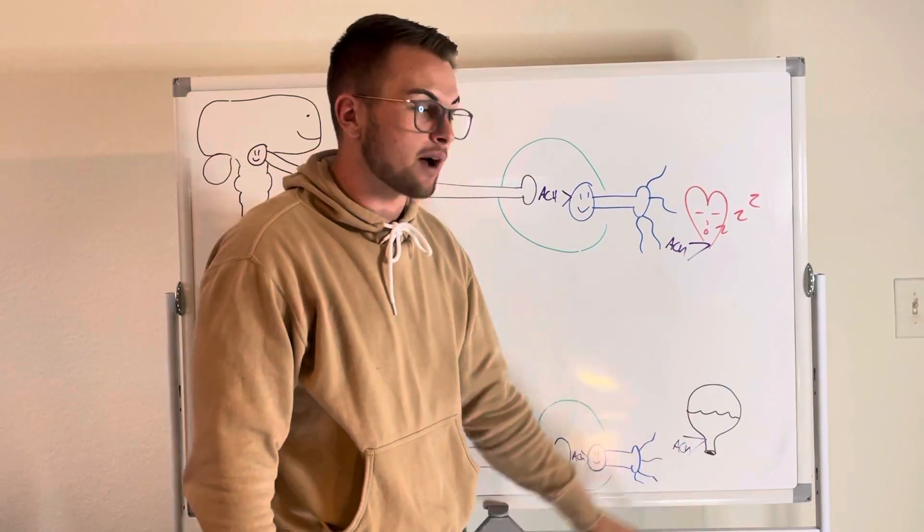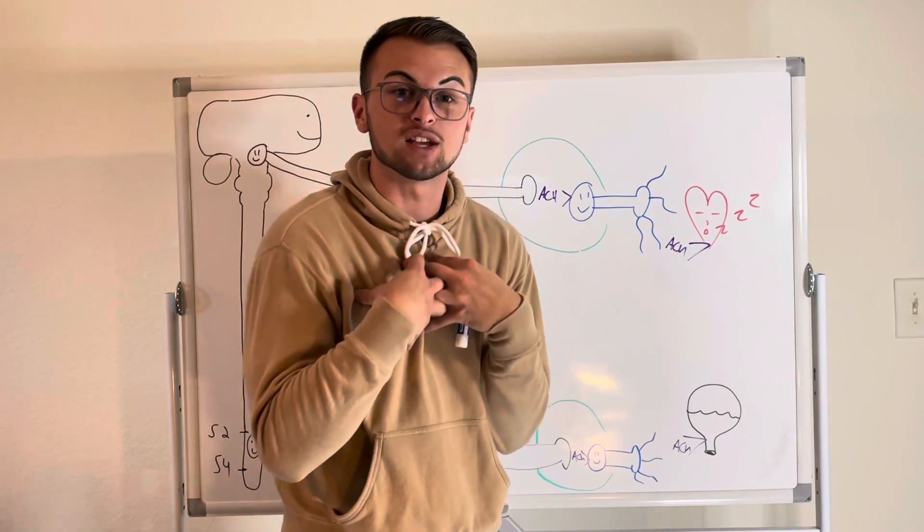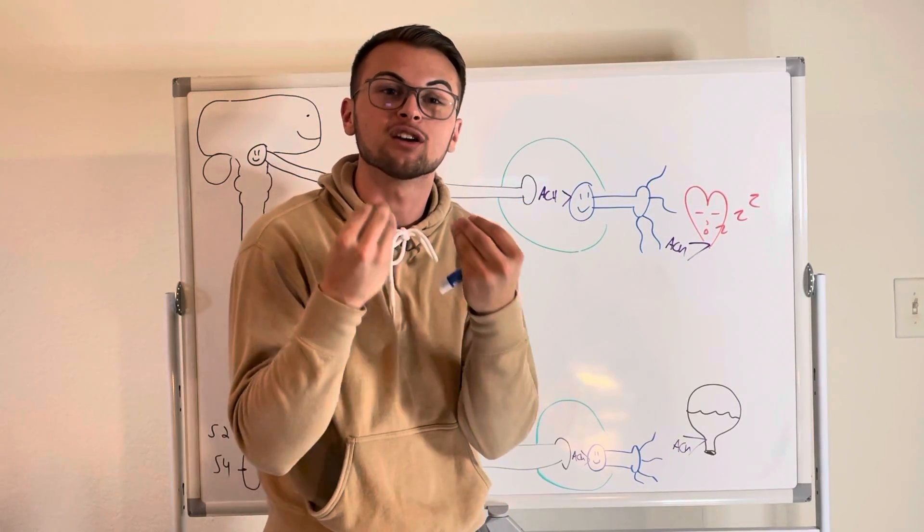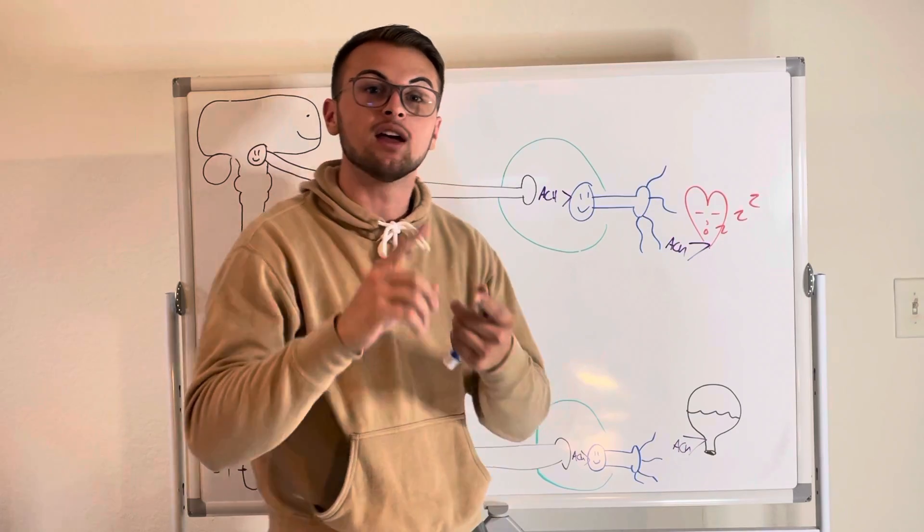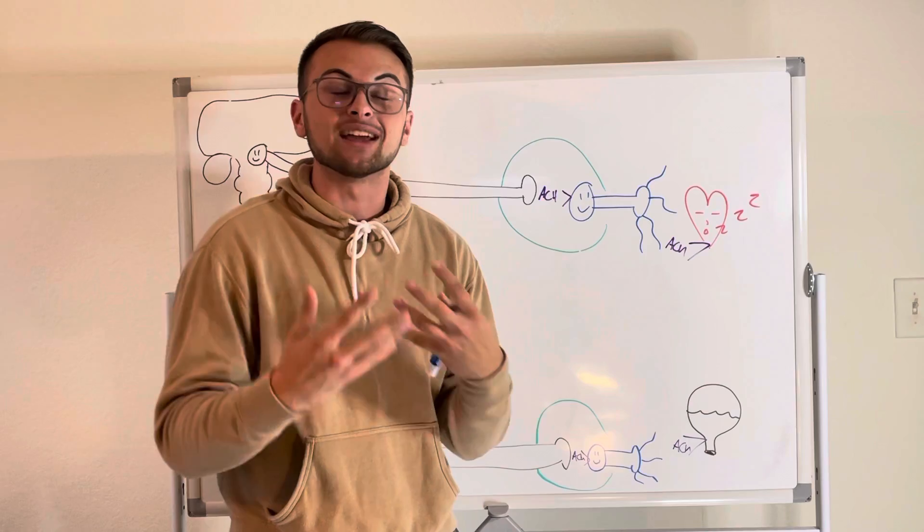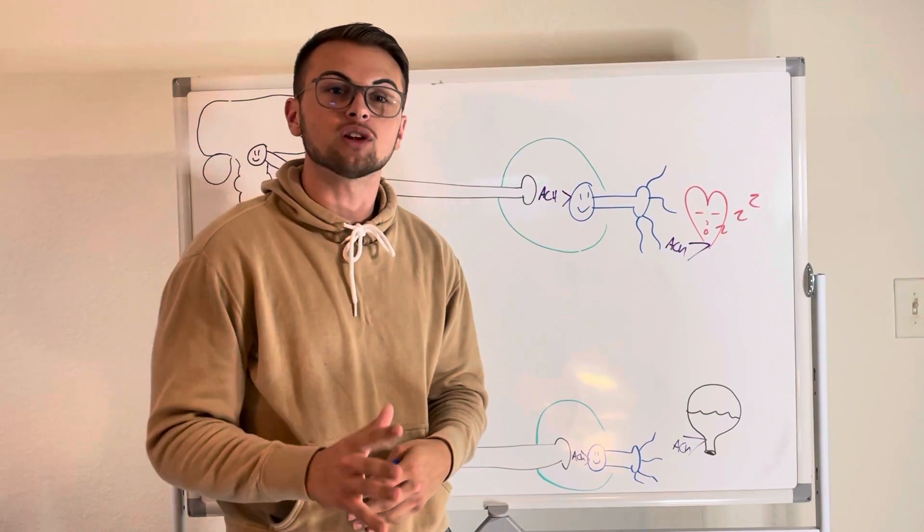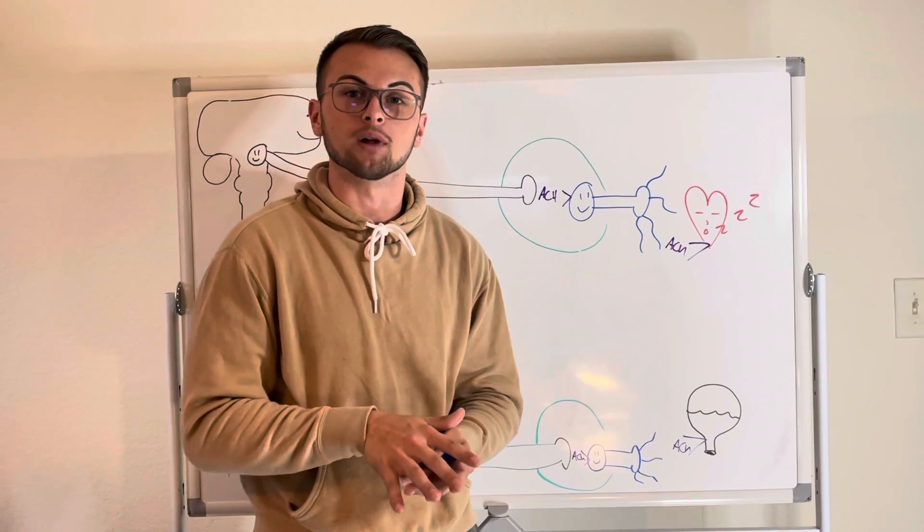Remember, acetylcholine bound to the muscarinic receptors, which is actually on the affected tissue, will have our desired parasympathetic effects just like a slowed heart rate, constriction of our bronchioles, an increase in motility and function of our GI system, and it will even allow the male genitalia to fill with blood.